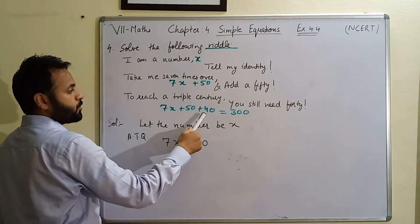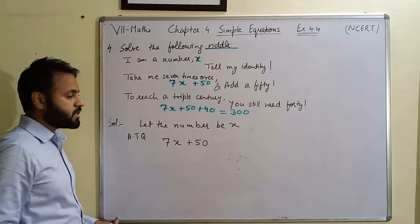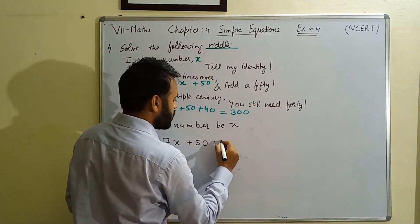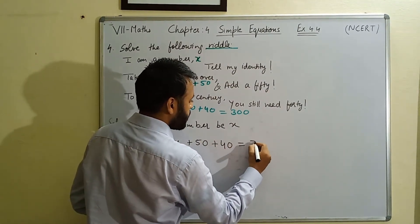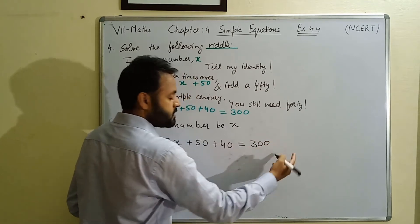We still need 40 to get a triple century. That means agar hum isme 40 or add karein, we will get a triple century. Triple century means 300.